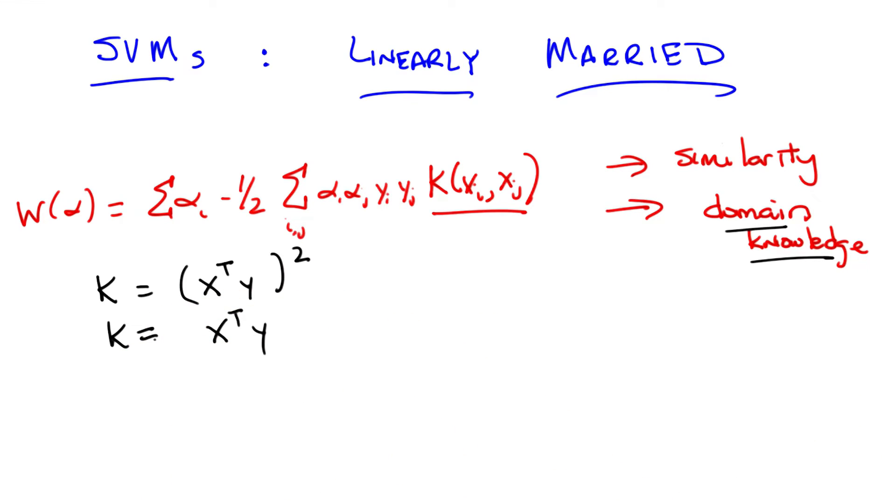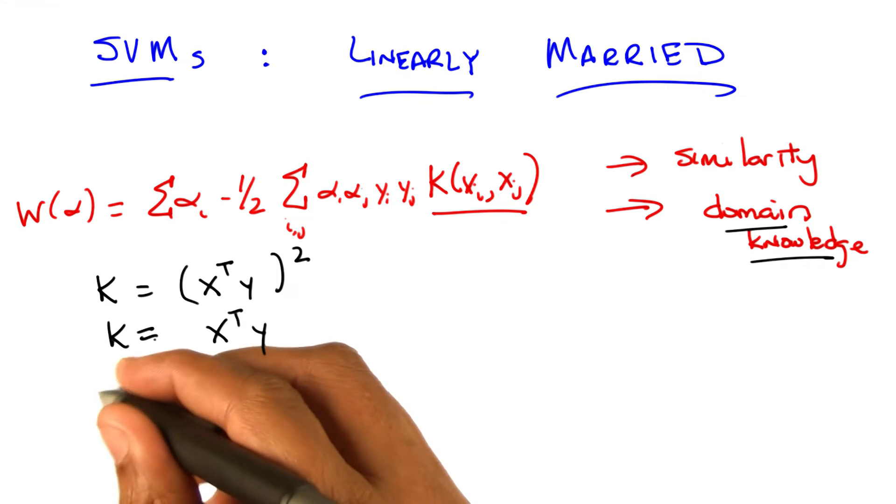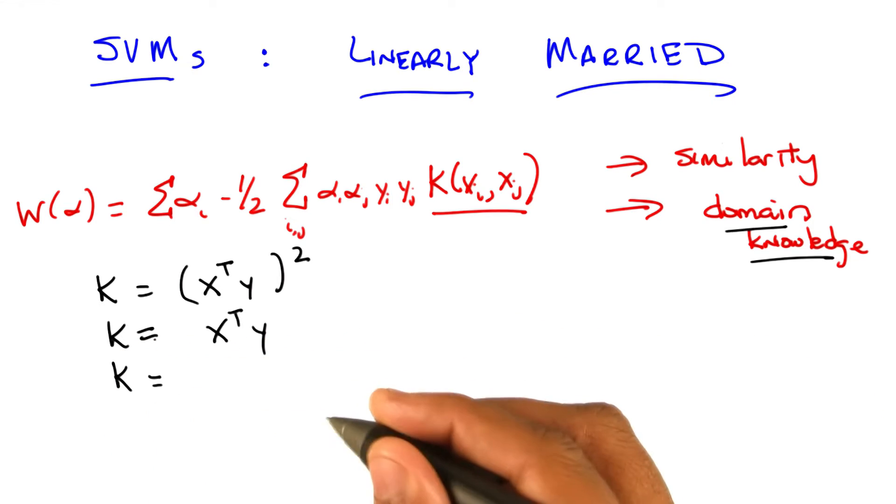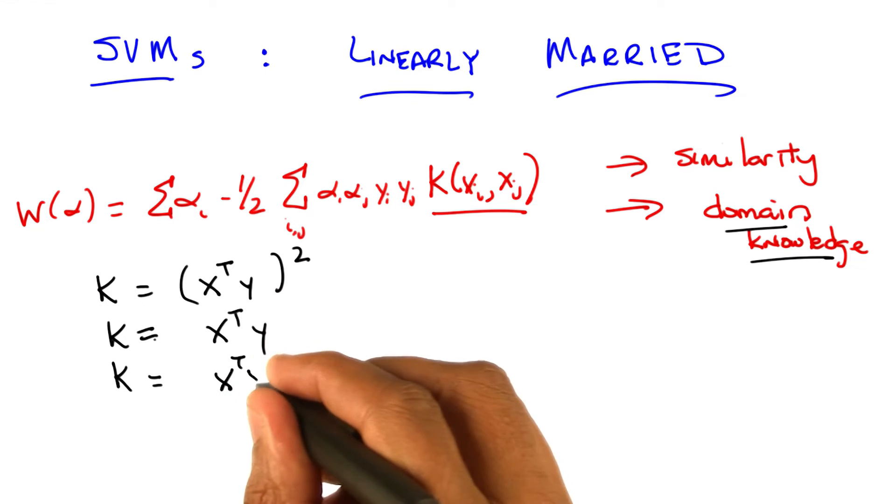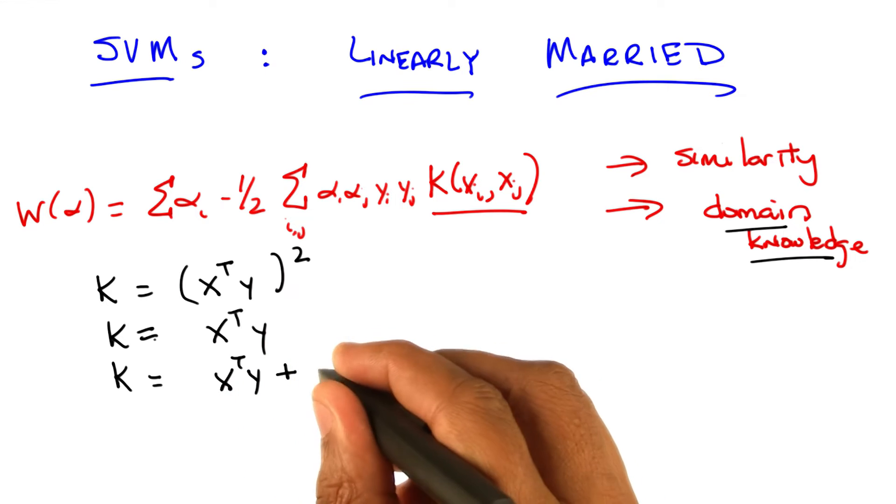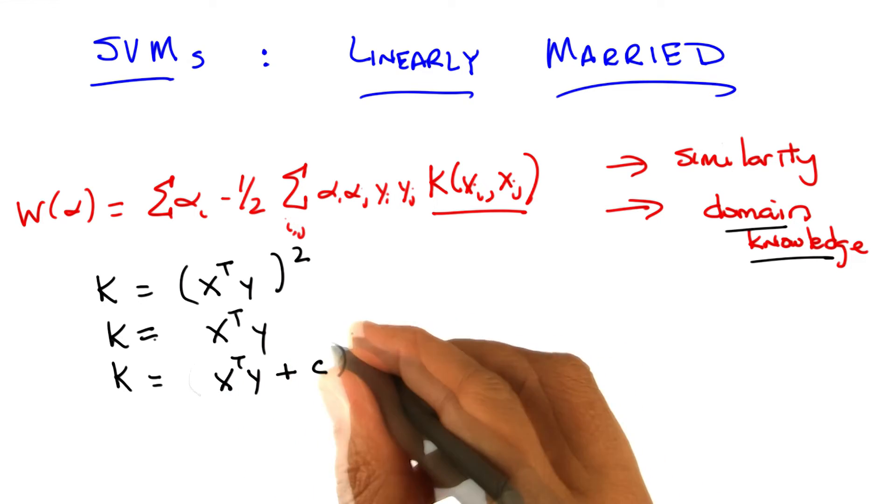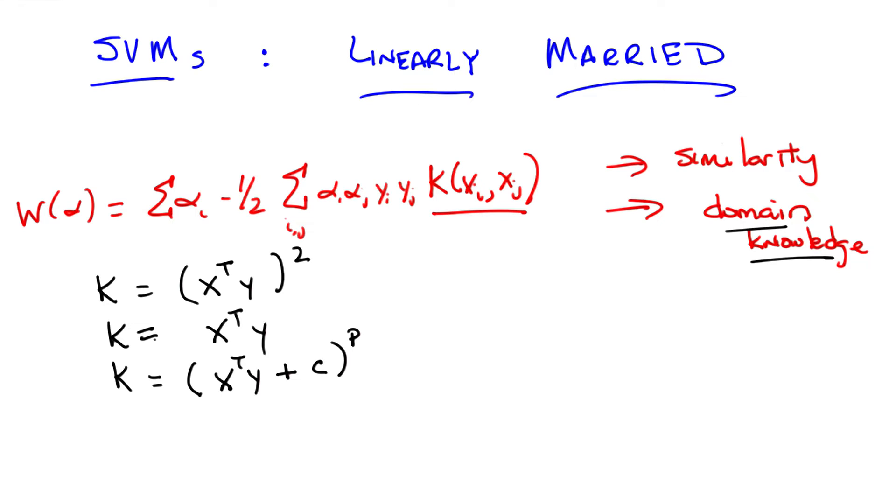Actually, we can write a general form of both of these, and it's a very typical kernel. It's the polynomial kernel, where you have x transpose y plus some constant, let's call it c, raised to some power p. And as you can see, both of those earlier kernels are in fact just a special case of this.